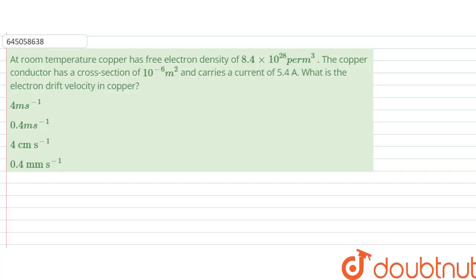The question says that at room temperature copper has free electron density of 8.4 into 10 to power 28 per meter cube. The copper conductor has a cross section of 10 to power minus 6 meter square and carries a current of 5.4 ampere. So what is the electron drift velocity in copper?